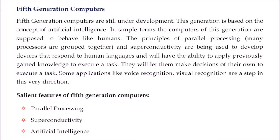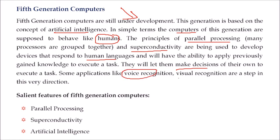Then the fifth generation computers — these are still under development and are based on AI, artificial intelligence. The goal is for computers to act and behave like humans, involving the principles of parallel processing and superconductivity, so that they can understand human language, use human experiences, and make decisions on their own. Examples include voice recognition, visual recognition, and self-driving cars. The salient features of the fifth generation are parallel processing, superconductivity, and artificial intelligence.